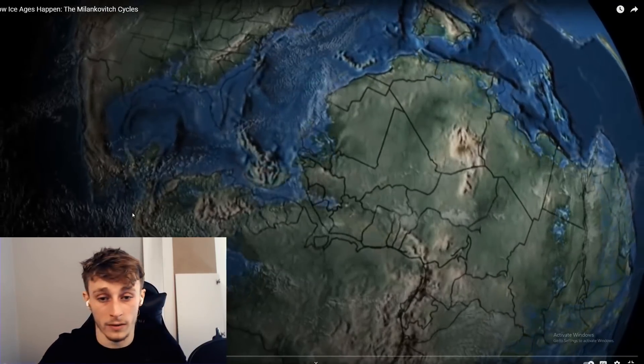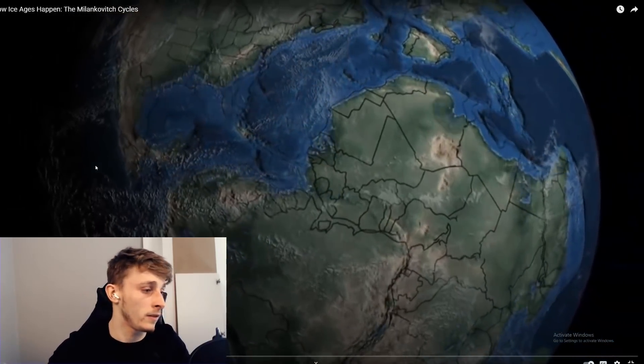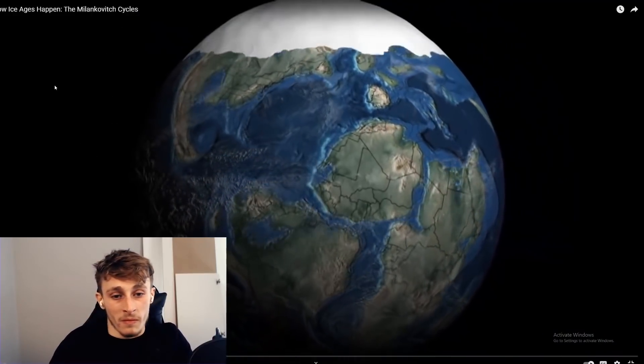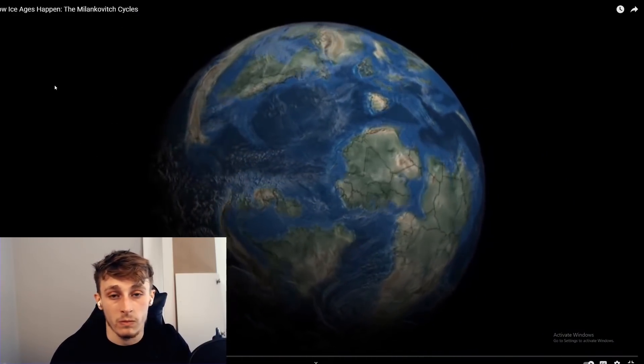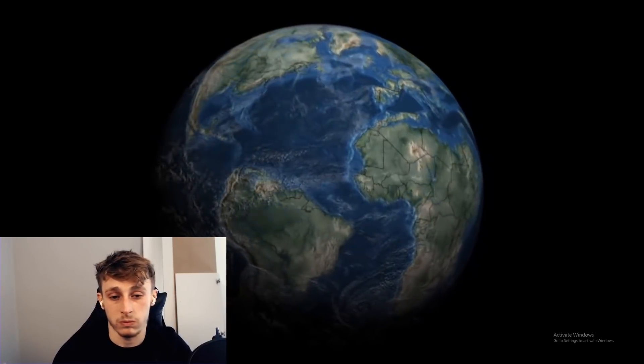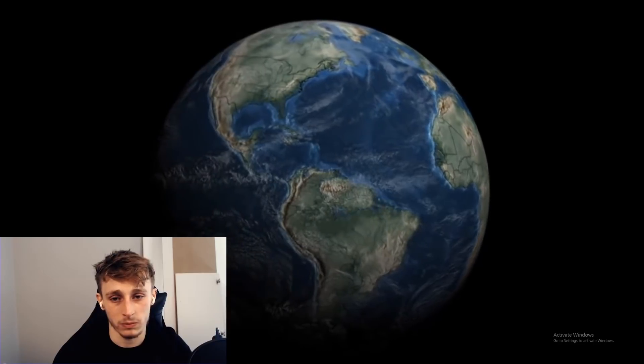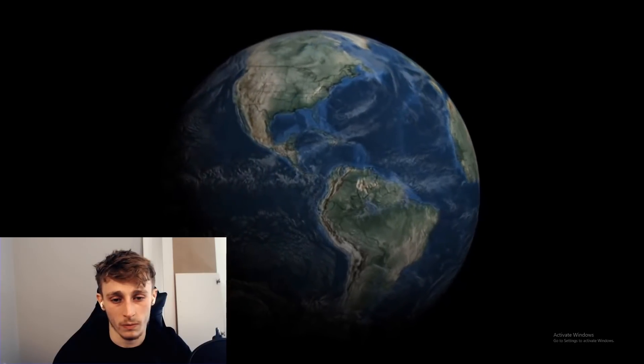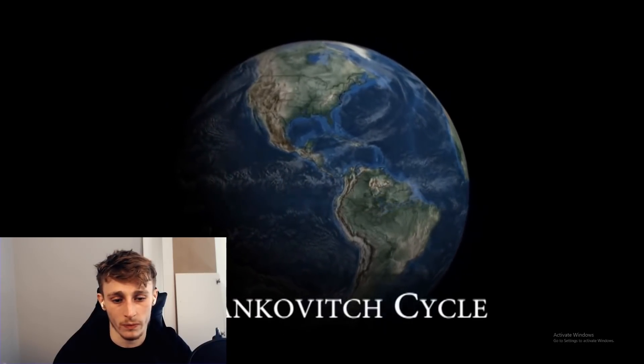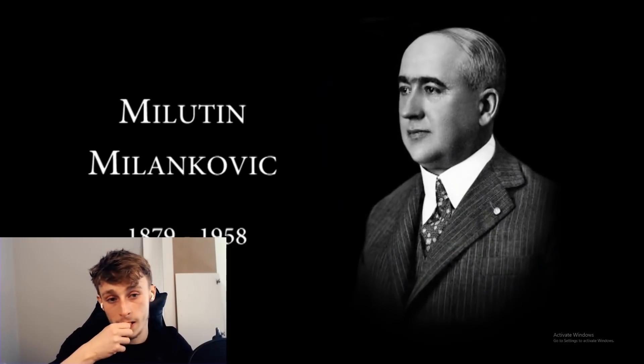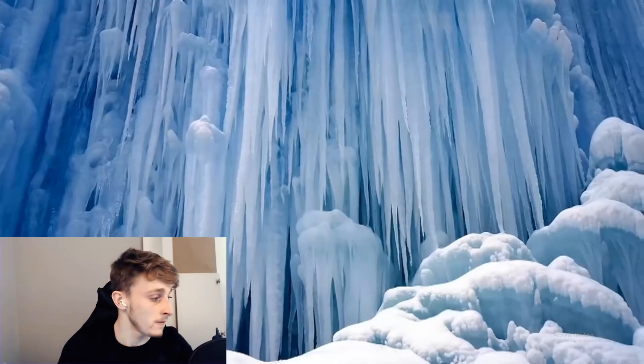Over Earth's long history there have been dramatic changes to our climate. The ice ages have come and gone, and what's surprising is that there's a strong pattern that explains why ice ages happen when they do. This is called the Milankovitch cycle, named after Milutin Milankovitch.